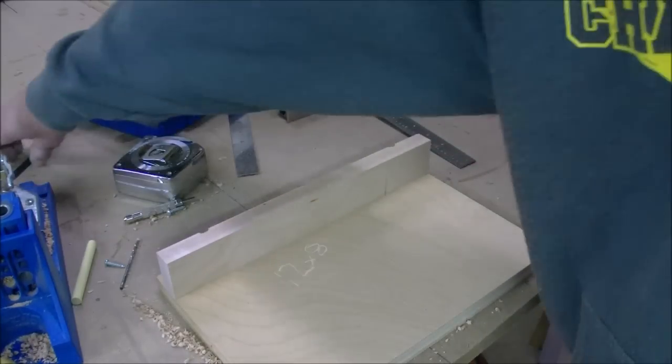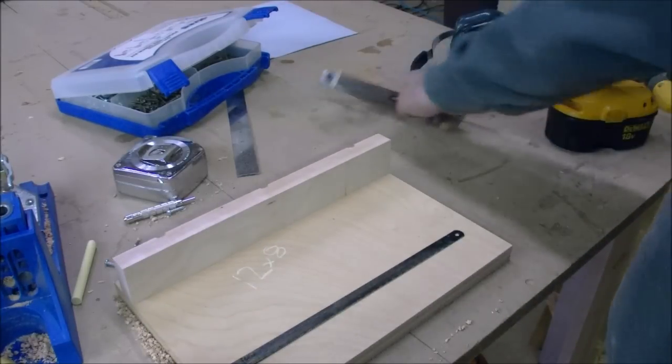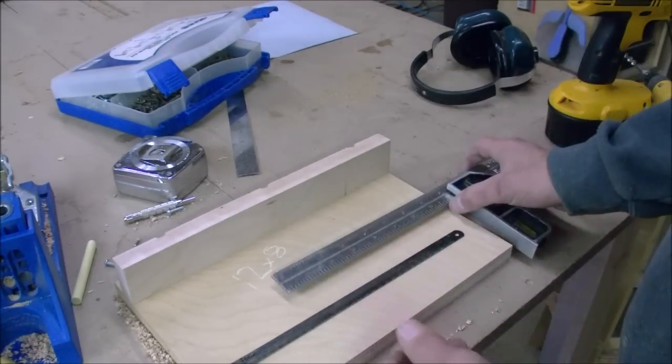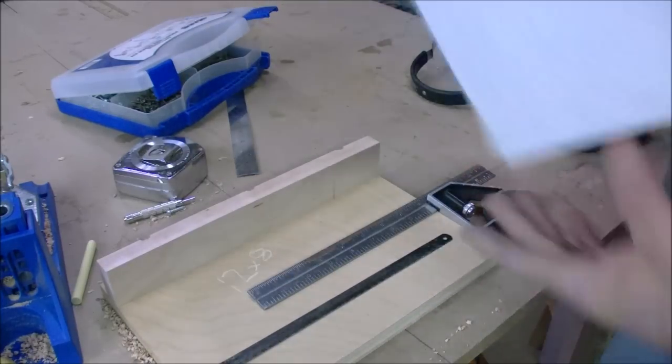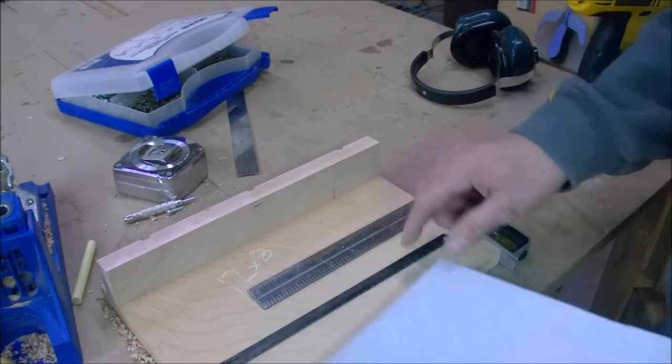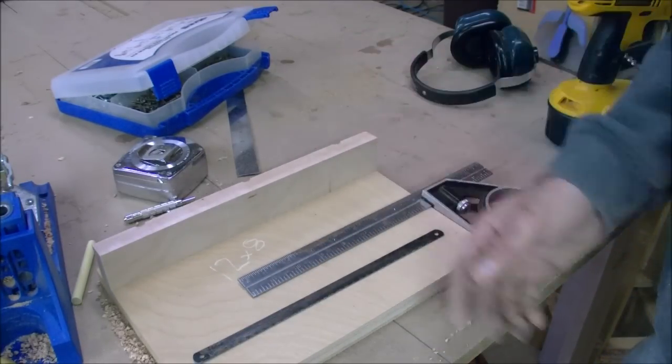Now to determine where your hacksaw blade is going to go, it's really a matter of preference. You can always come back with your square, figure out different sizes, and draw straight lines across your jig to reference where you might want to cut. You just want to take your measurement from the front teeth of the hacksaw blade to wherever you'd like.